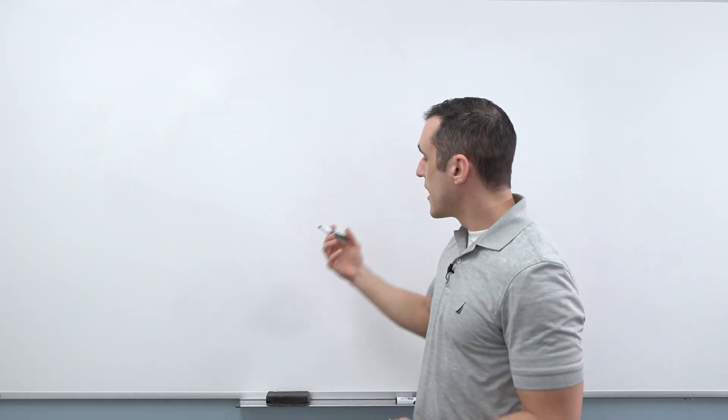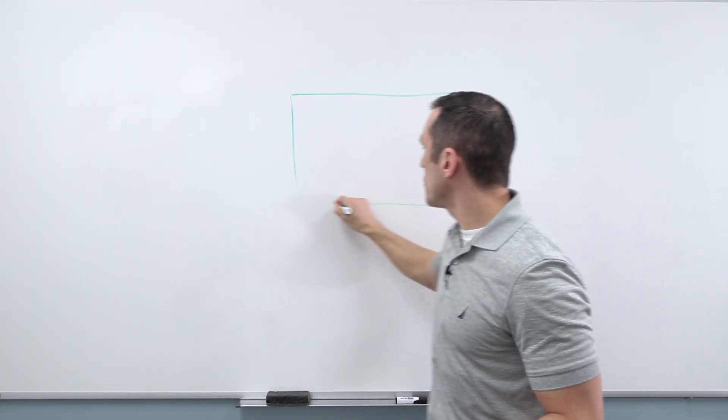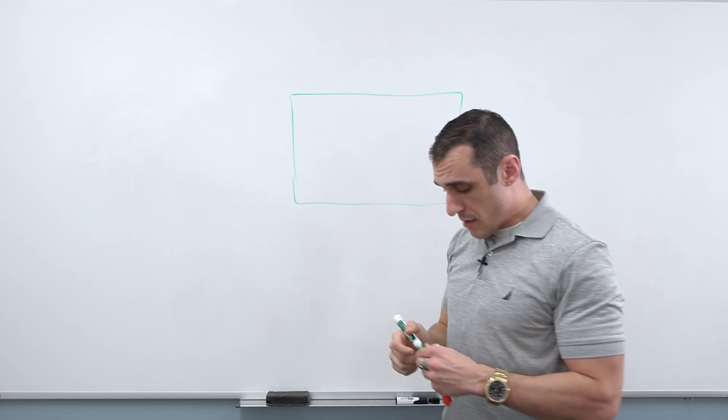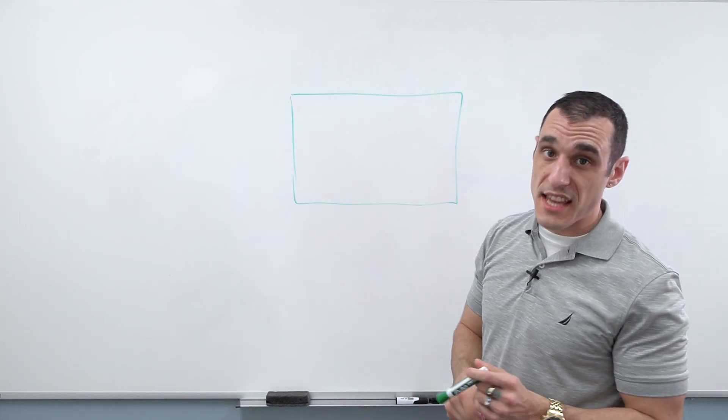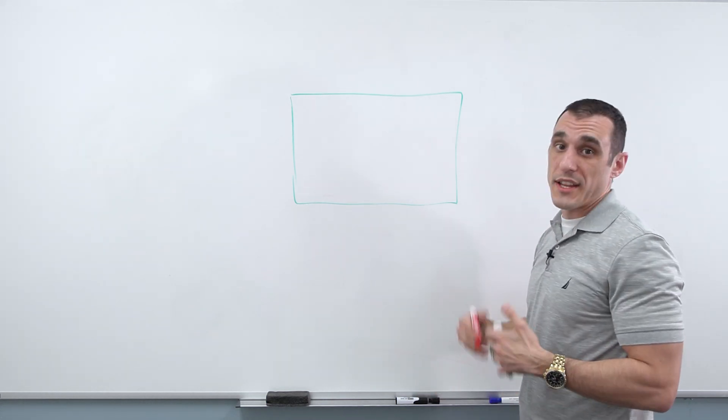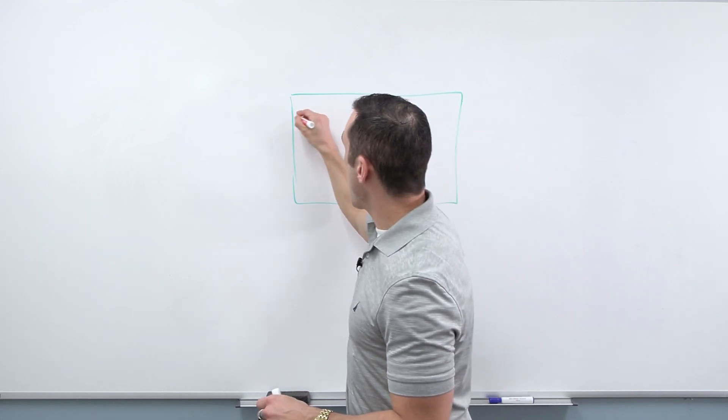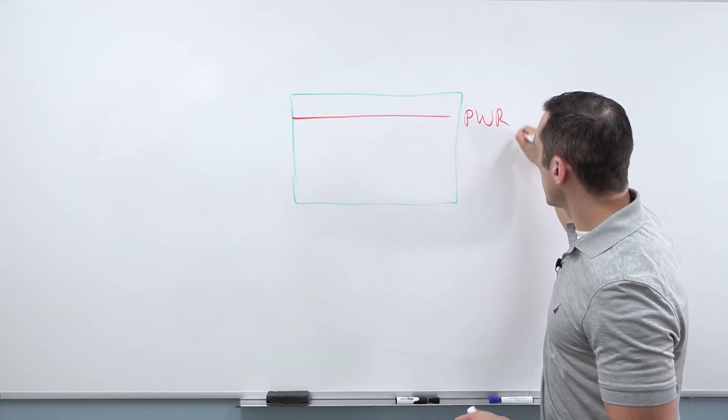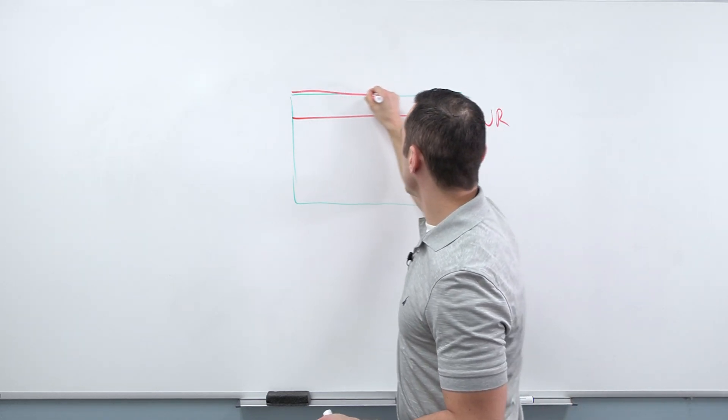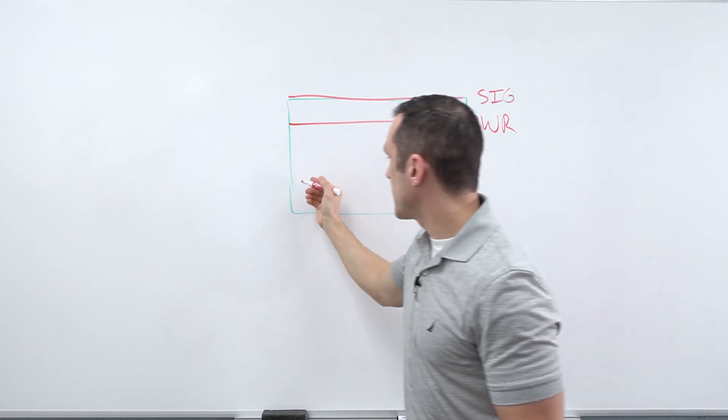I'm gonna just start by drawing our typical four-layer stack-up. Now, this isn't exclusive to four-layer stack-ups, but it is something that is a good tool to use as just an example of what happens or what can happen when you're trying to get your return current in your power plane back to your ground plane. So let's just say that this is power and I'm routing signals here in the top layer. So this is SIG.